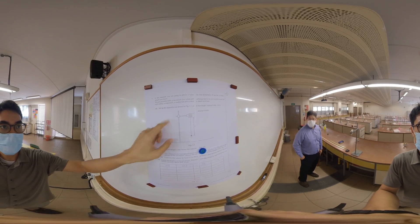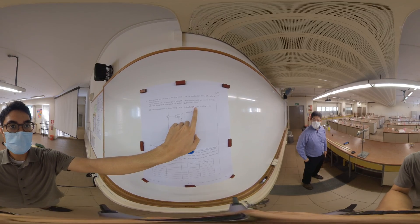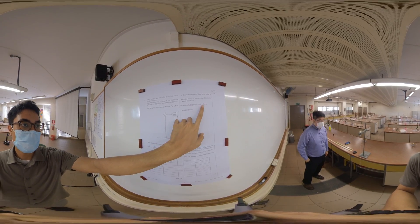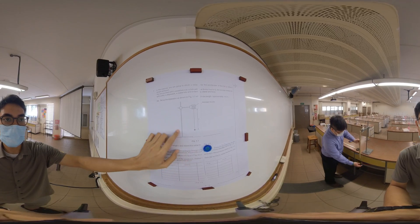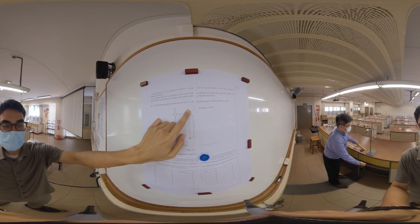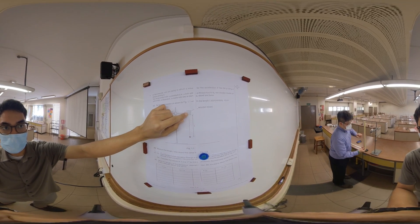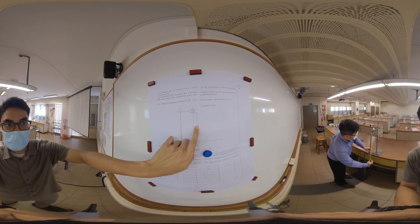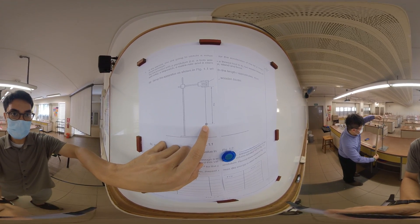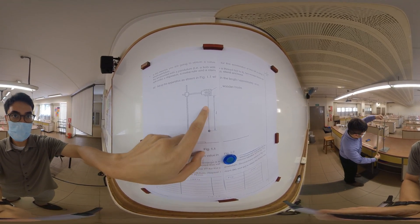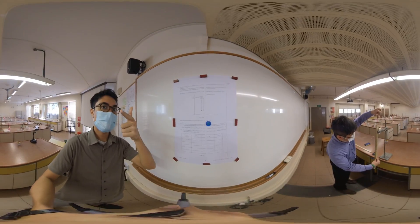You have to set up the apparatus as shown in the figure here with the length L approximately 40 cm. Looking at the diagram, you have your retort stand, your wooden base, and the thread with the bob attached is clamped. Be careful — you have to measure L from the middle of the bob all the way up to the bottom of the wooden block.